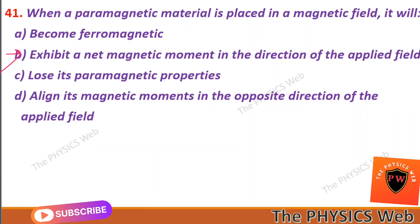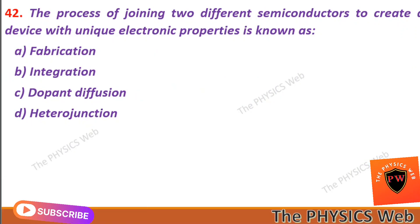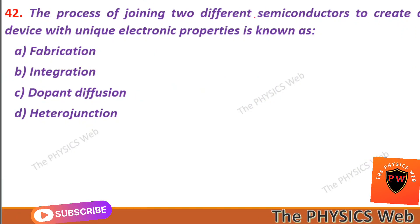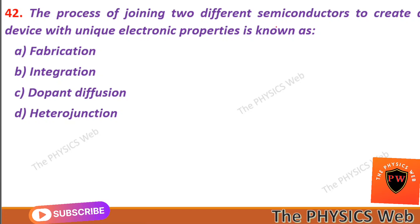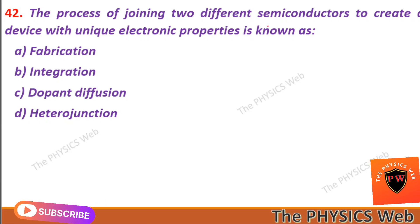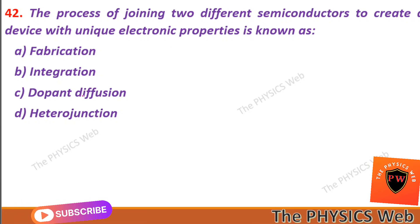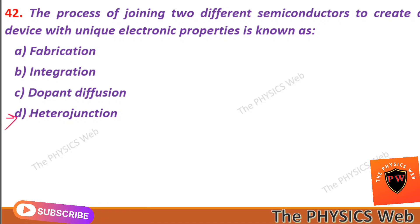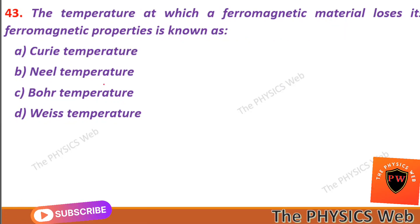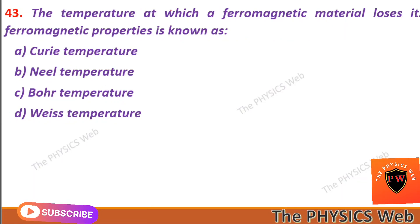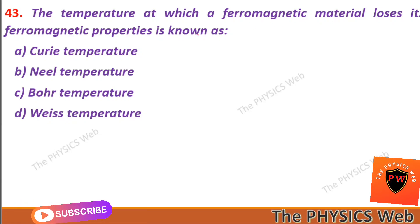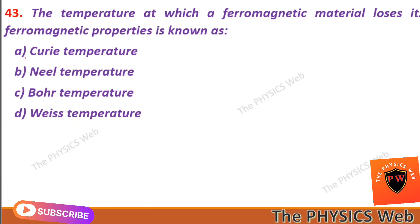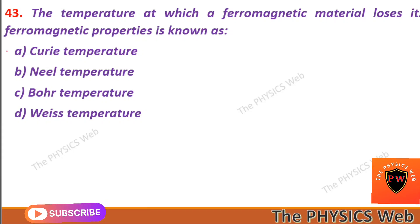Next, question forty-two: the process of joining two different semiconductors to create a device with unique electronic properties is known as a heterojunction. So D is your correct option. Question forty-three: the temperature at which a ferromagnetic material loses its ferromagnetic properties is known as the Curie temperature. So A is your correct option.